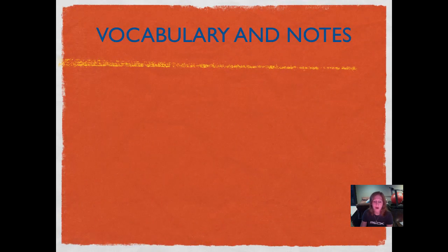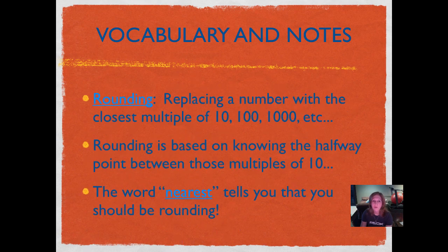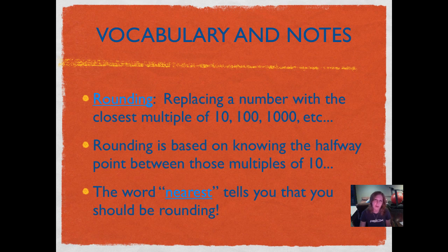Here are your vocabulary and notes. Rounding is when you replace a number with the closest multiple of 10, 100, 1000, etc. Rounding is based on knowing the halfway point between those multiples of 10. Any time you see the word 'nearest,' that tells you that you're going to be rounding. Go ahead and pause this, write down your vocabulary and notes, and then push play.